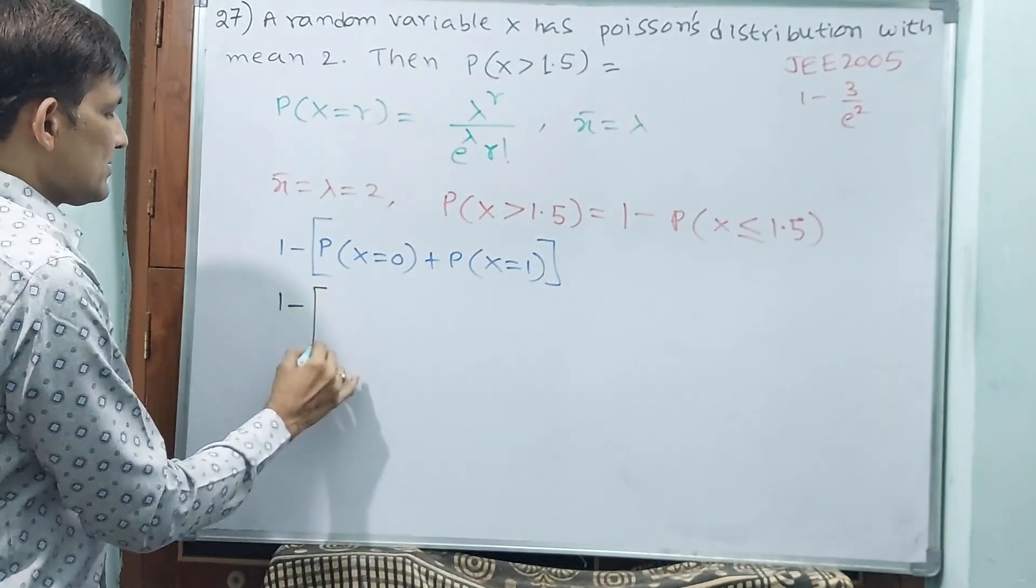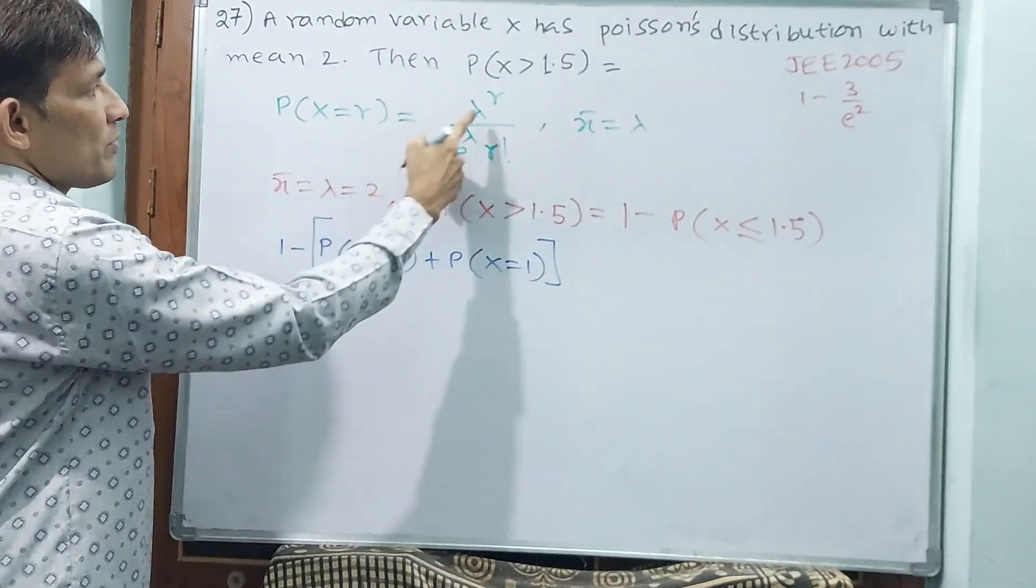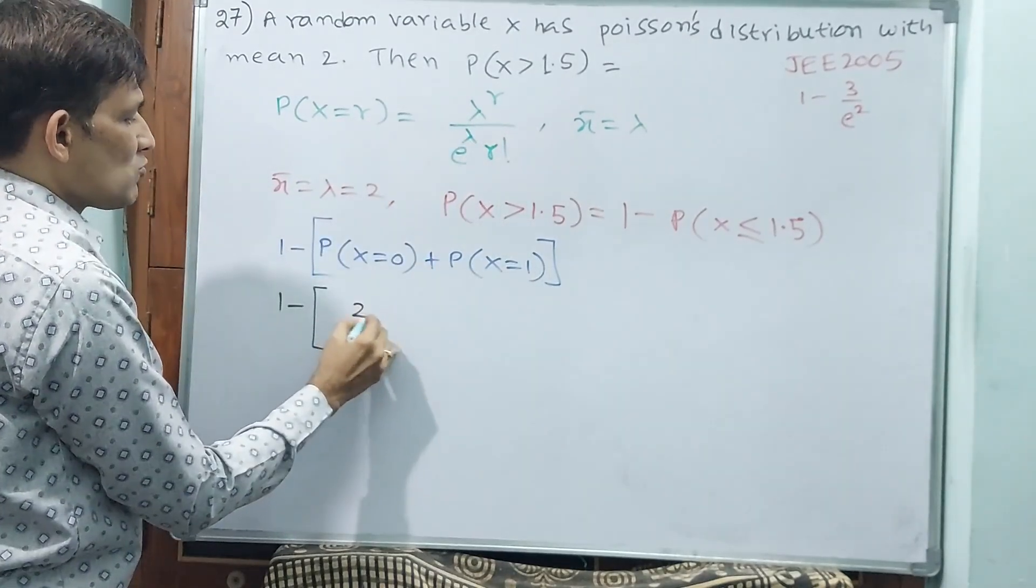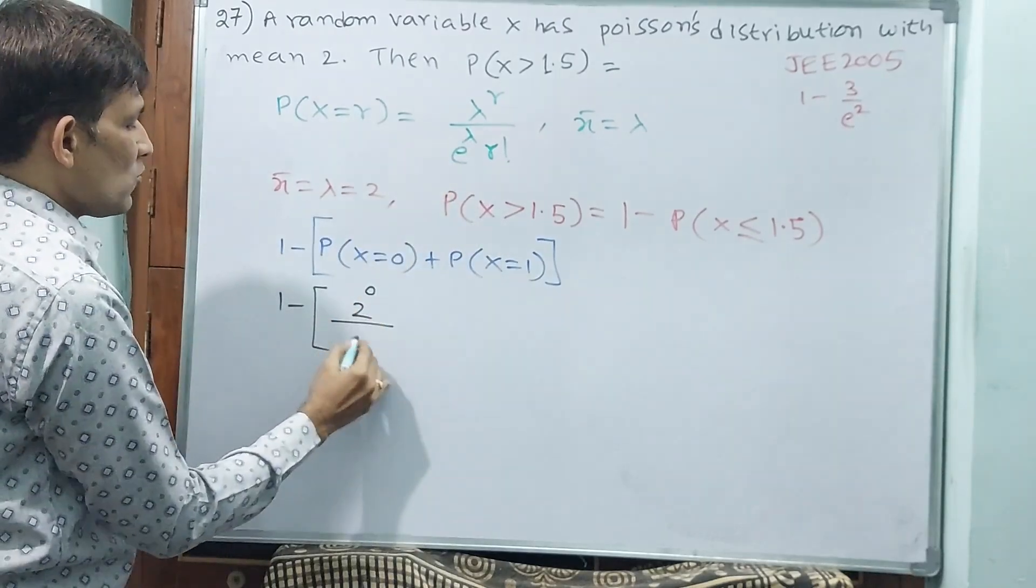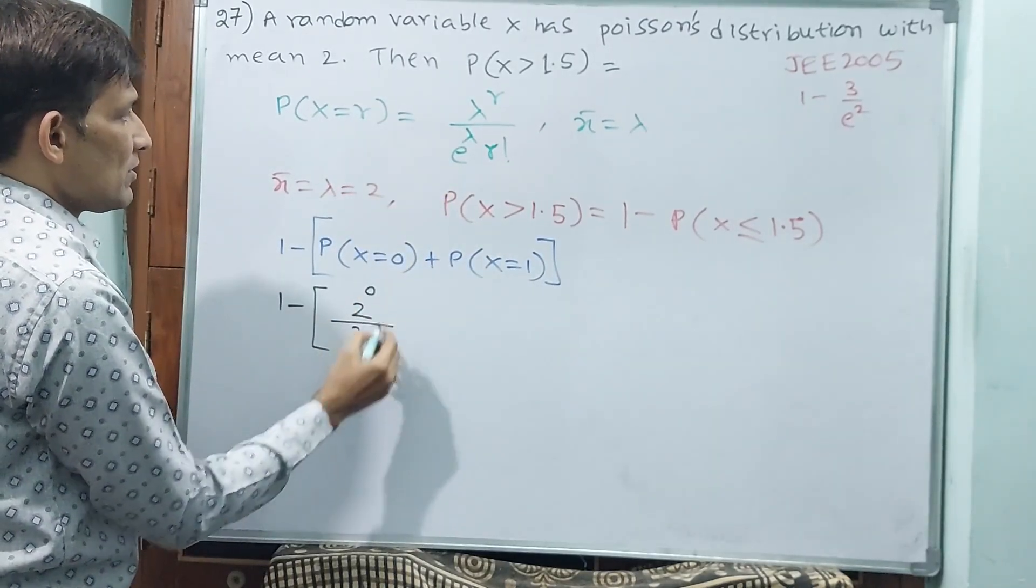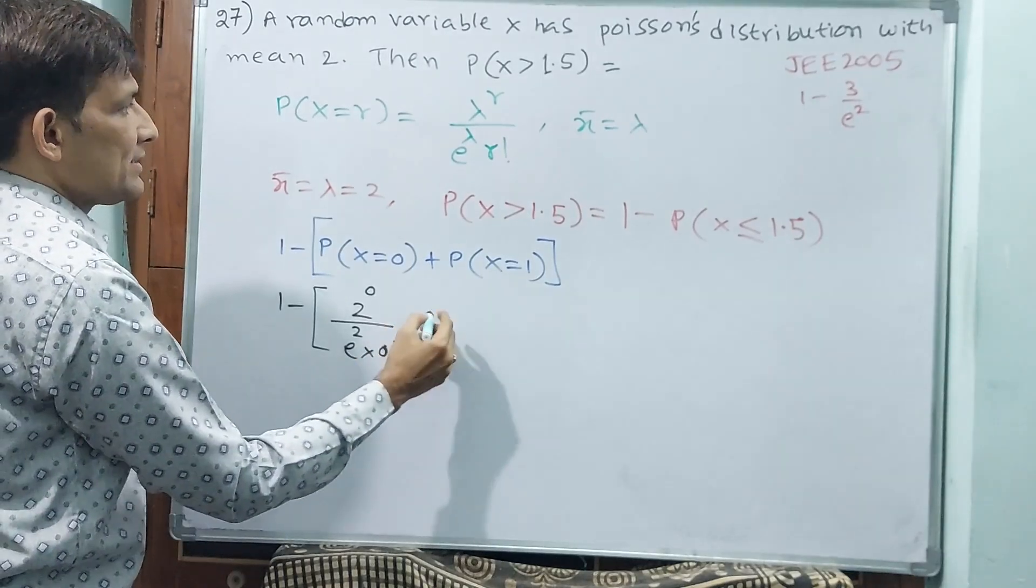1 minus probability of x is equal to 0. x is equal to 0 means, lambda power r. Lambda is equal to 2. 2 power 0 divided by e power 2 into 0 factorial. 0 factorial is 1. We know very well. Plus the 1.